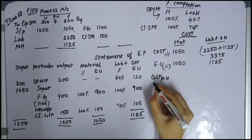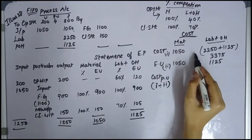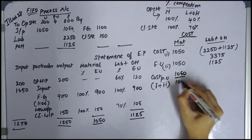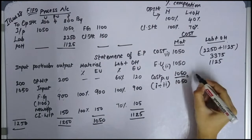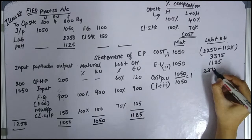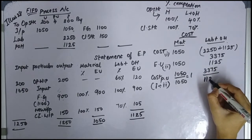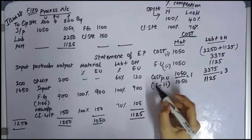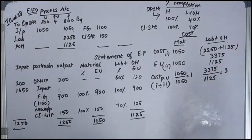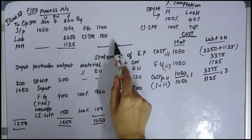Cost per unit: row 1 is cost, row 2 is equivalent units. Material cost per unit is 1050 divided by 1050 equals 1. Labor and overhead cost per unit is 3375 divided by 1125 equals 3. So material cost per unit is 1, labor and overhead cost per unit is 3, giving a total cost per unit of 4. Now we fix the cost for closing stock and finished goods.